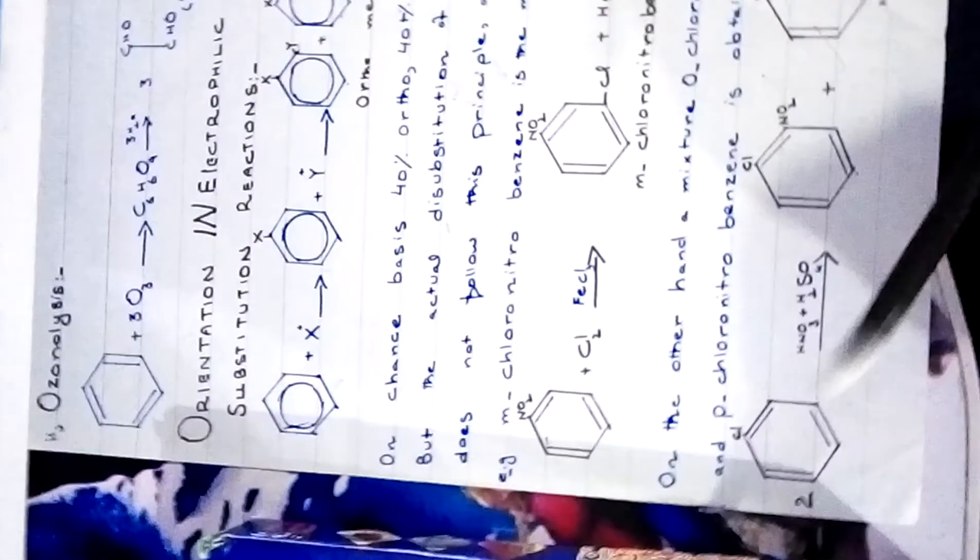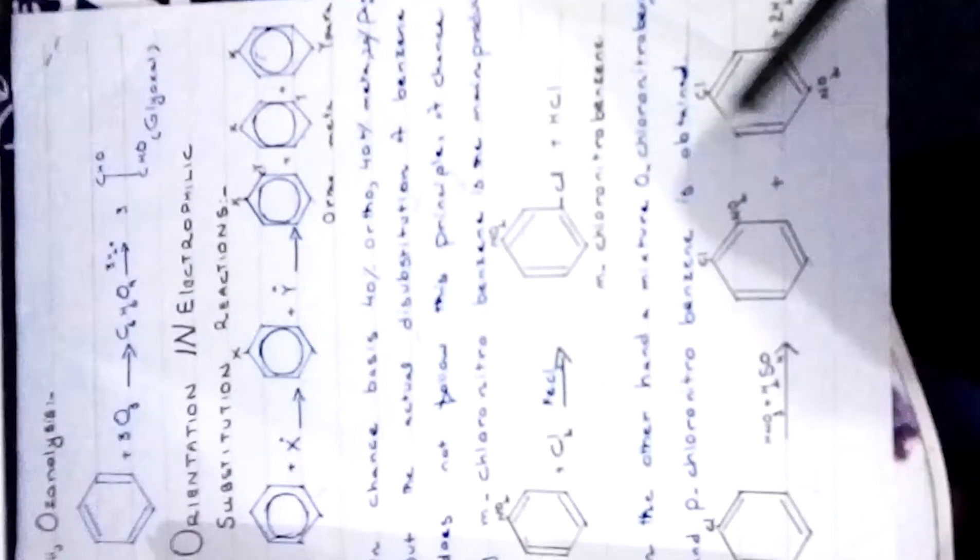Next is meta directing groups. These groups withdraw the electrons of the benzene ring. These groups have the opposite effect to that of ortho and para. These groups withdraw electrons of the benzene ring towards themselves, thereby reducing their availability to the electrophiles.